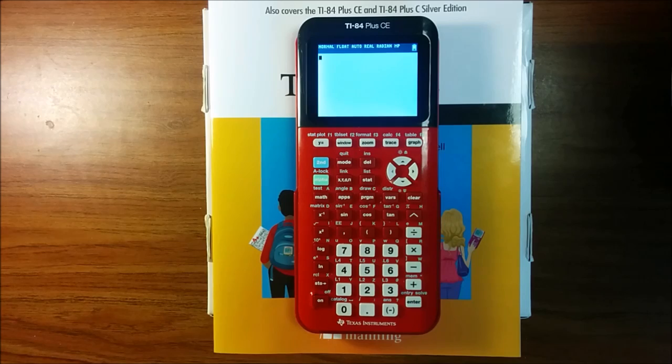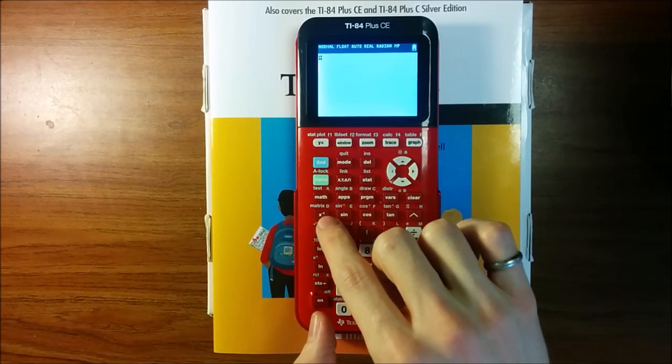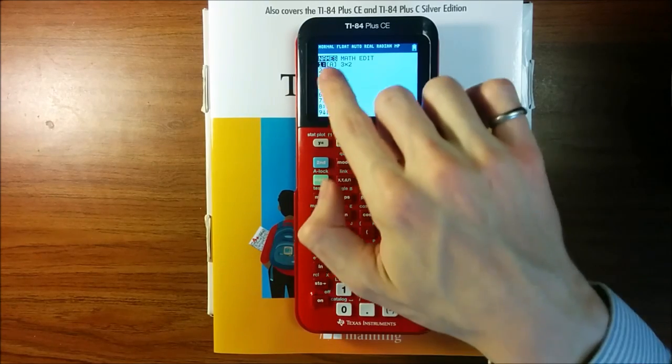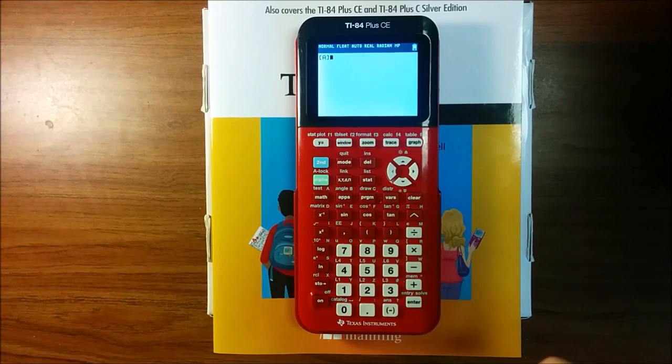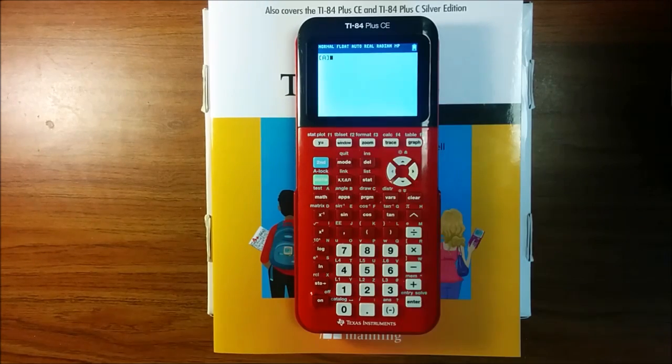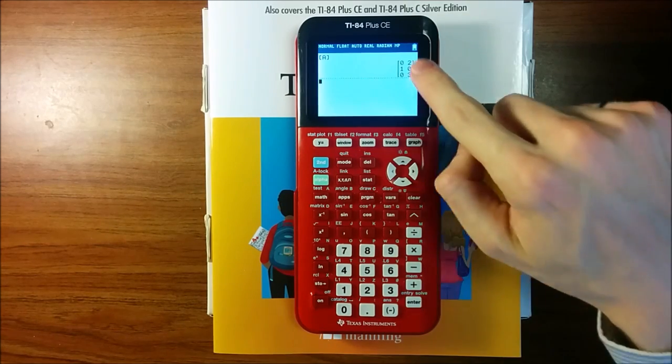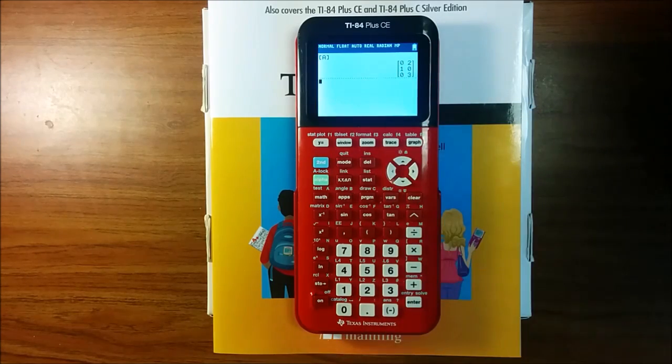How can I use this on the home screen? Well, if I press second and then x to the negative one for matrix once again, I'll get the matrix menu again. Names, A is three by two as we just defined, so I can press enter to paste just the name of the matrix A to the home screen. The calculator will print out the numbers that I just put into that matrix, zero, one, and zero in the first column, two, zero, and three in the second column. Just like lists, you can access single elements of the matrix.